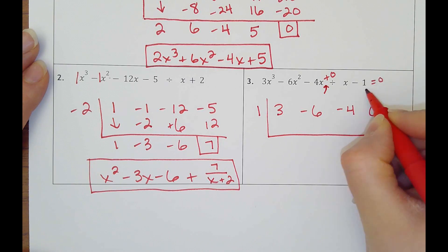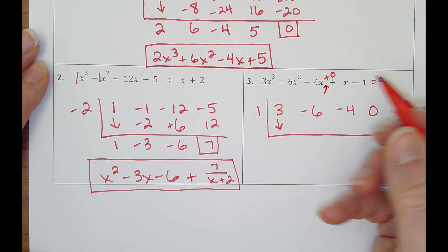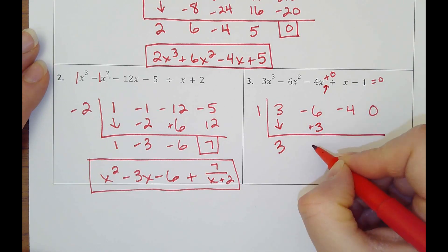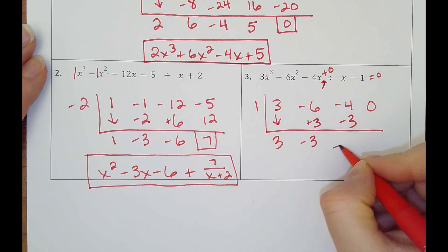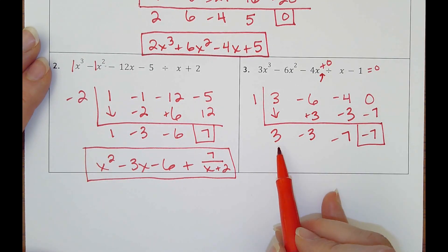Think you're setting it equal to 0 and solving what x is, and then you do your thing. Drop down the 3. 3 times 1 is 3. Negative 6 plus 3 is negative 3. Negative 3 times 1 is negative 3, that's negative 7. Negative 7 times 1 is negative 7. 0 minus 7 is negative 7, so it does have a remainder.